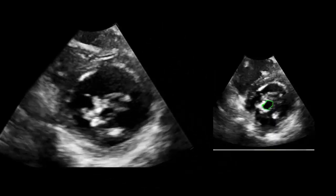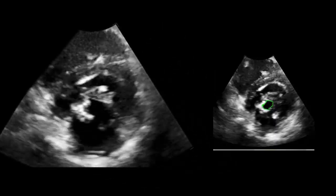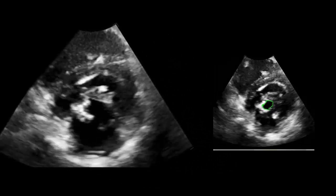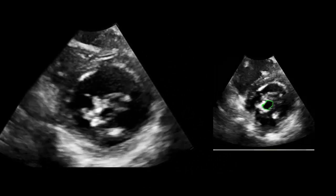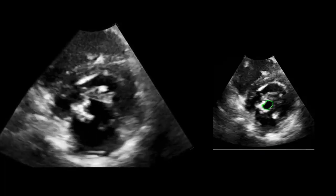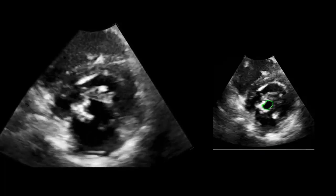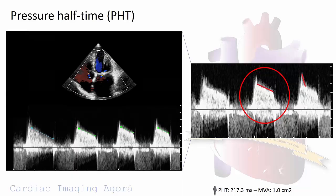For assessment of severity, it is central to measure the anatomic area by planimetry, and 2D planimetry is the reference method. Estimation of the mitral valve area can also be performed with pressure half-time.